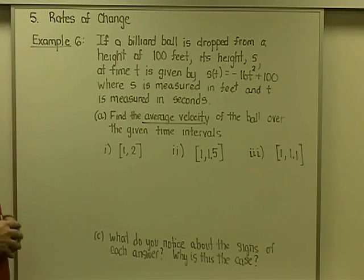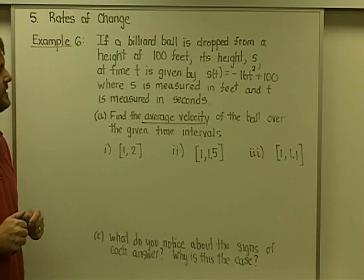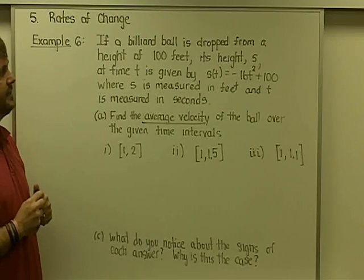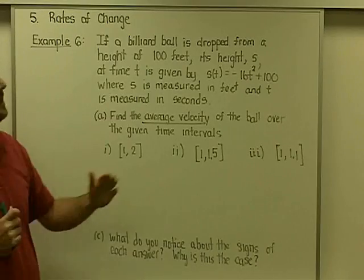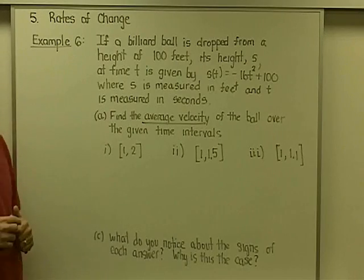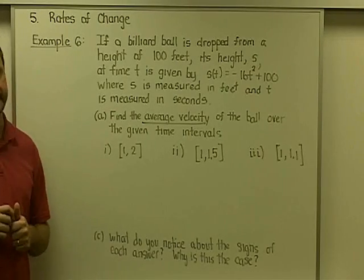Our example here says that we have a billiard ball that's dropped from a height of 100 feet. Its height, s, at any time t, is given by this equation: s(t) equals negative 16t squared plus 100. s is measured in feet, t is measured in seconds.